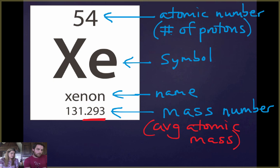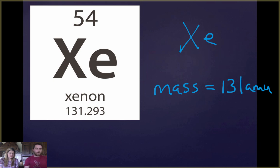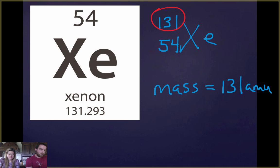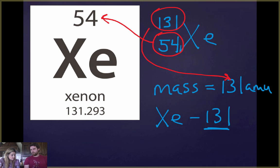Let's say we have an isotope of xenon with a mass of 131 AMUs. To write this properly, you place the mass number 131 in the top left and the atomic number 54 in the bottom left, next to the symbol Xe. The mass is always the larger number on top, and the atomic number is below. You may also see it written as xenon-131, meaning xenon with a mass of 131.